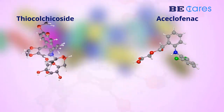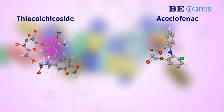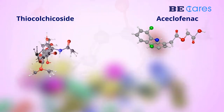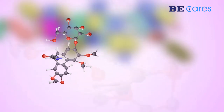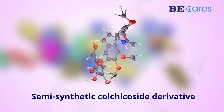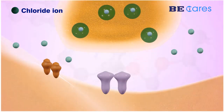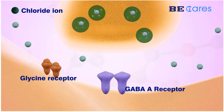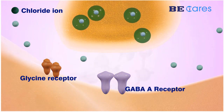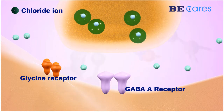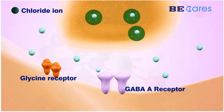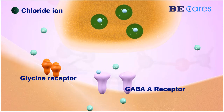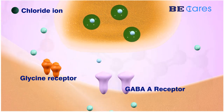the combination of thiocolchicoside and aceclofenac has been found to be effective in the treatment of muscular spasm. Thiocolchicoside is a semi-synthetic colchicoside derivative that binds to the inhibitory glycine and gamma-aminobutyric acid GABA-A receptors. GABA is the main inhibitory neurotransmitter in the human brain, and it exerts its action by activating the GABA inhibitory pathways.